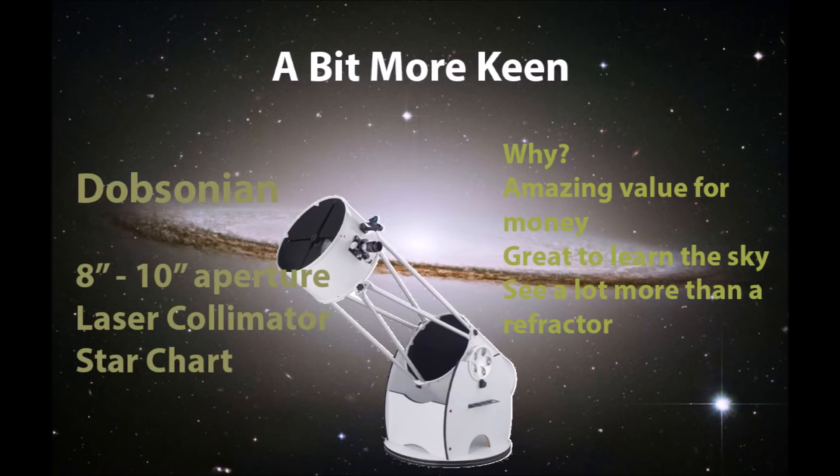They also provide amazing views and are reasonably priced. But you're going to need some sort of collimation gear, particularly a laser collimator. A star chart to know what you're looking at and to find objects. And some patience. While you're going to do this, this is great to learn the sky. You'll be able to see a lot more objects than you could out of a refractor telescope, and you'll get a lot more enjoyment out of it, provided that you're willing to move something around that's a bit heavier and spend time setting up.